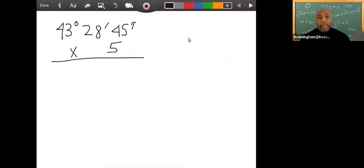So here's our problem. I'm going to write it in this particular way: 43 degrees, 28 minutes, 45 seconds times 5. Now the way to do this is multiply five to each of those units. So let's do that first. So five times 45, and we're just going to write the answer down. So that's 225, and that's seconds.